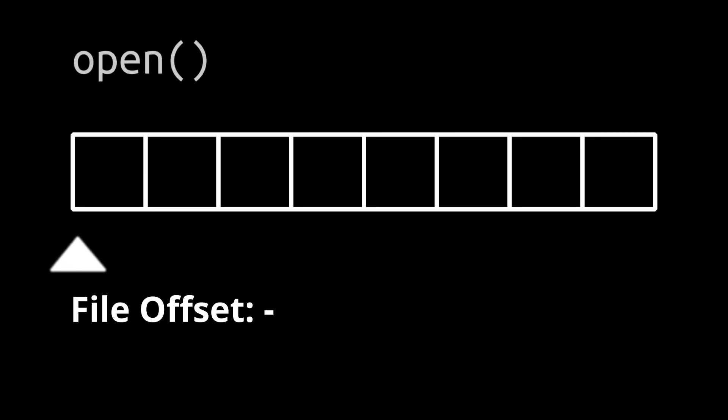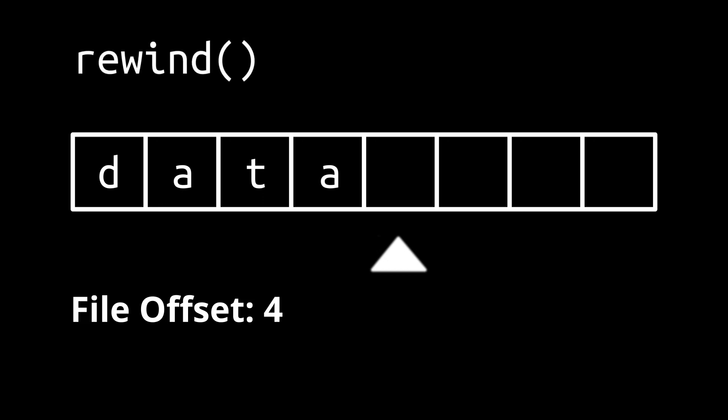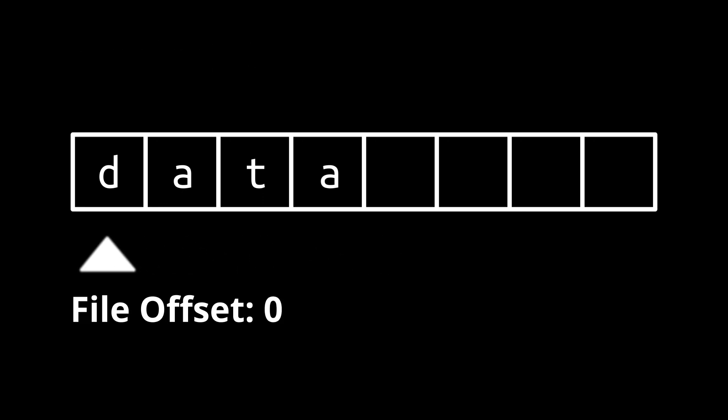Just to clarify what is going on here, let me draw this out. Let's represent our file by a series of boxes, each of which holds a single character. We will also keep track of the file offset as a pointer to the file contents. We start with an empty file that we just opened, so the offset points at the start. When we write some data, for every byte we add, the file pointer moves to point to the next position. So if we add a 4-byte string like "data", it will end up looking like this. When we try to read from it without rewinding, the offset points at the end of the file, so the read call will not return anything. Rewind is needed to set the file offset to the start, and now we can read our 4 characters.